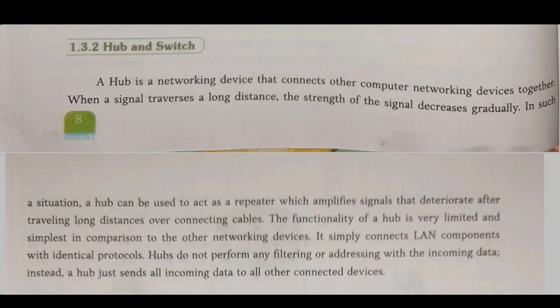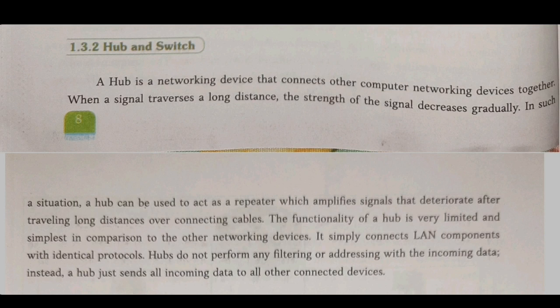A hub is a networking device that connects multiple computers together in a network, and it is also required to amplify the signal of data in a network. When we connect computers in a network and transmit data over cables, there are distance limitations. For example, a twisted-pair cable can transmit data only up to 100 meters. When the distance exceeds 100 meters, we need to amplify the signal — for that purpose, we use a hub. That's why you see black boxes on cable TV wires — those are used to amplify signals.